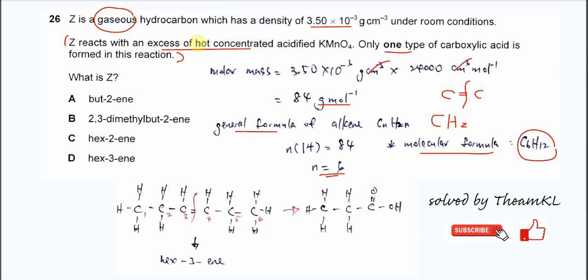Z reacts with excess hot concentrated acidified KMnO4. This tells you the C=C bond breaks and only forms one type of carboxylic acid. It's telling us that it must be hex-3-ene. Why? Because hex-3-ene, the C=C double bond is between the third carbon and fourth carbon, and this alkene is symmetrical. So when the C=C double bond breaks after it's oxidized by KMnO4, it will form only one carboxylic acid, which is propanoic acid.